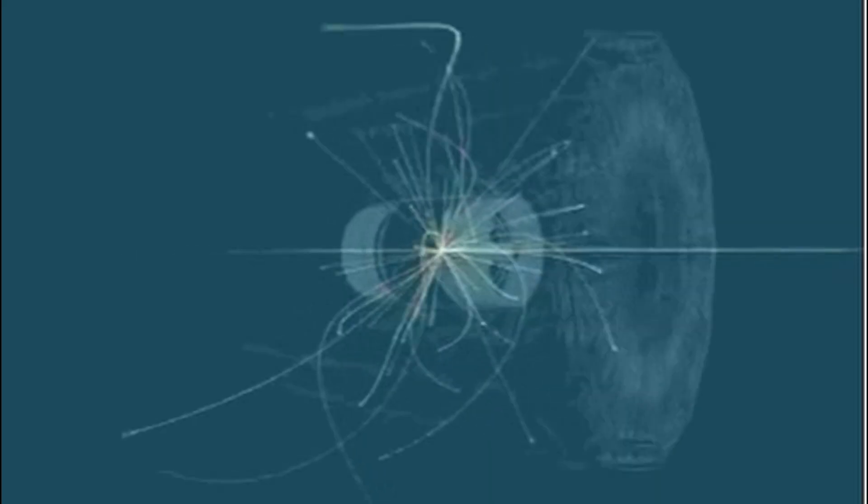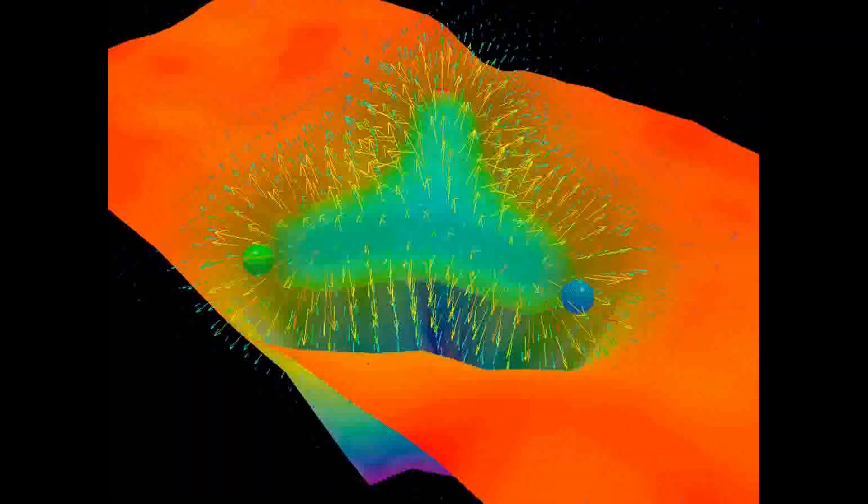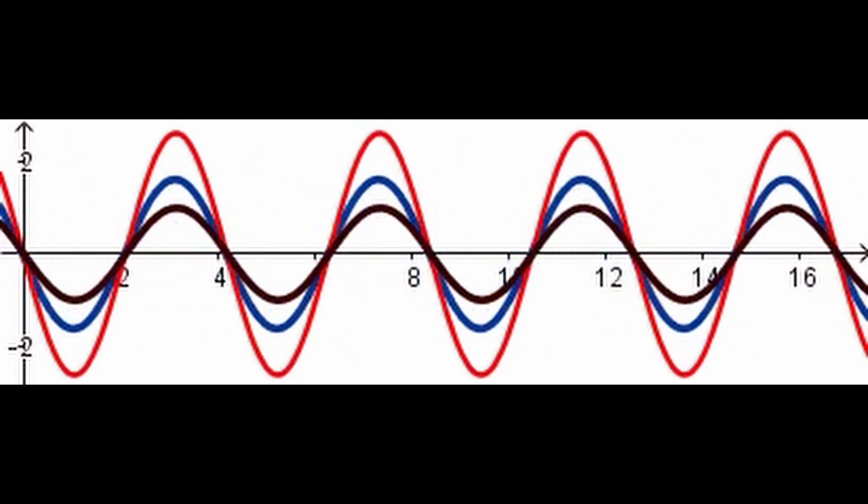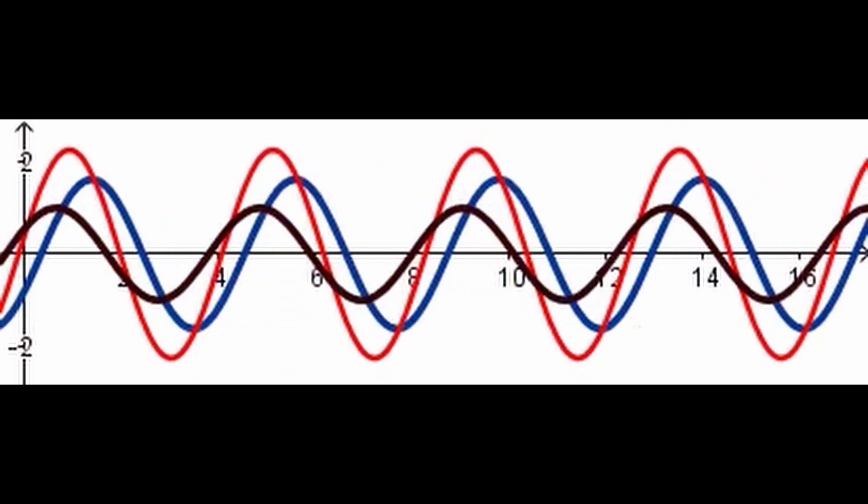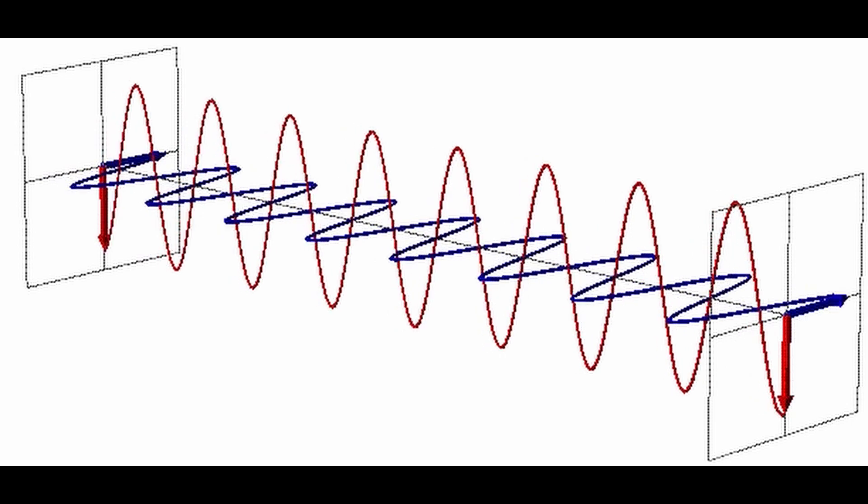In Bohmian mechanics, the particle positions are considered and evolved according to the guiding wave function ψ. These trajectories are governed by the guidance equation, which is a fundamental aspect of this interpretation. For a single particle in one dimension, the guiding equation is...